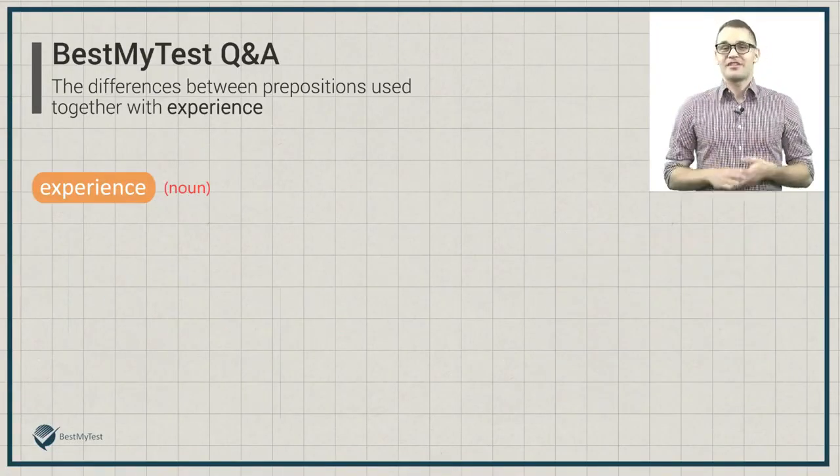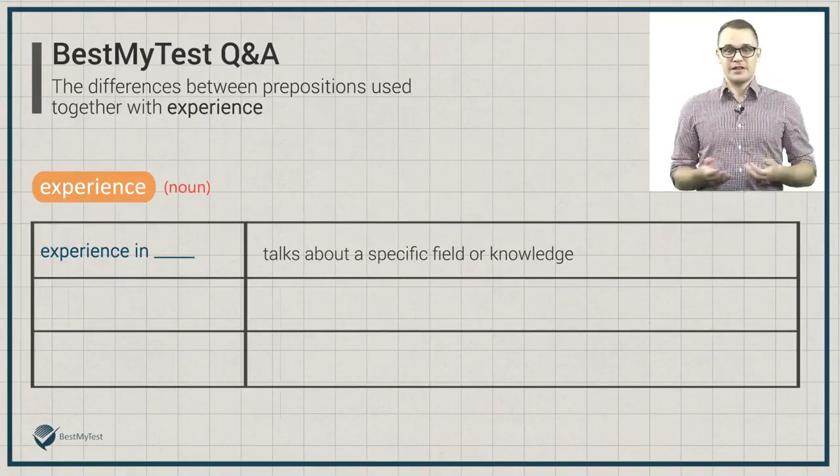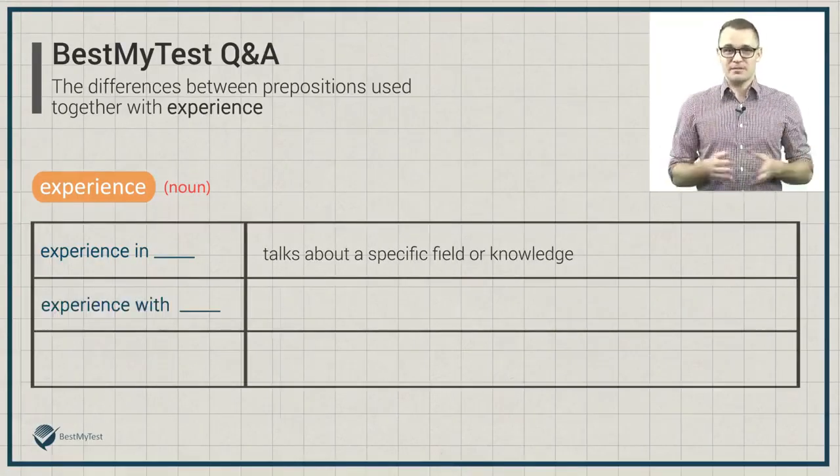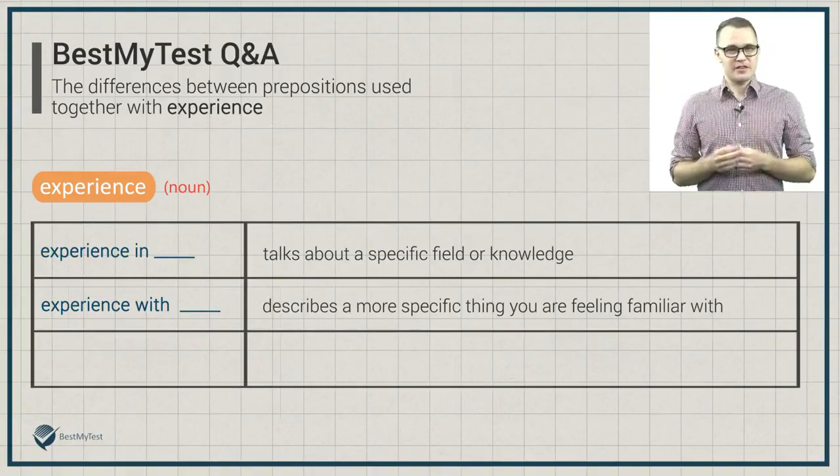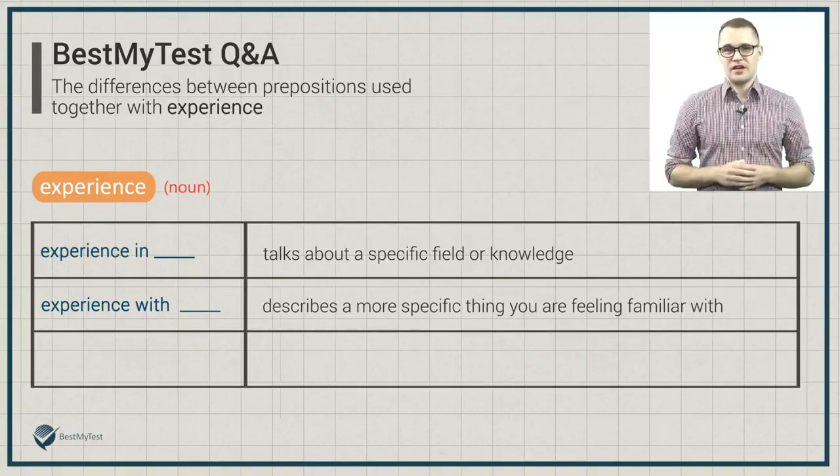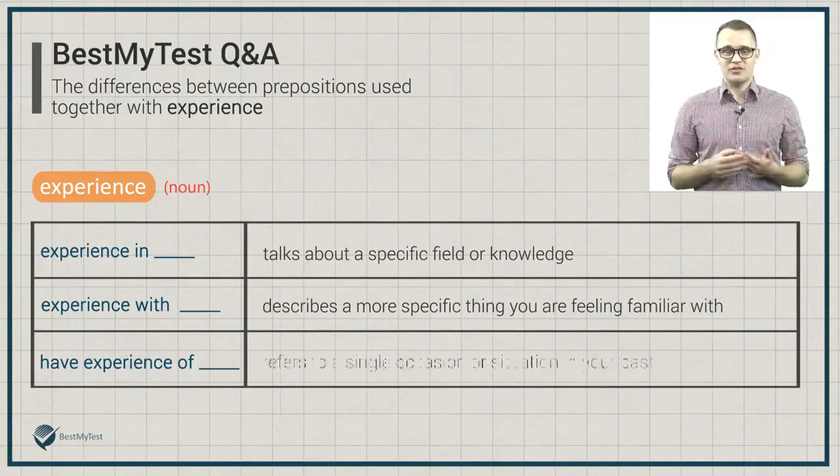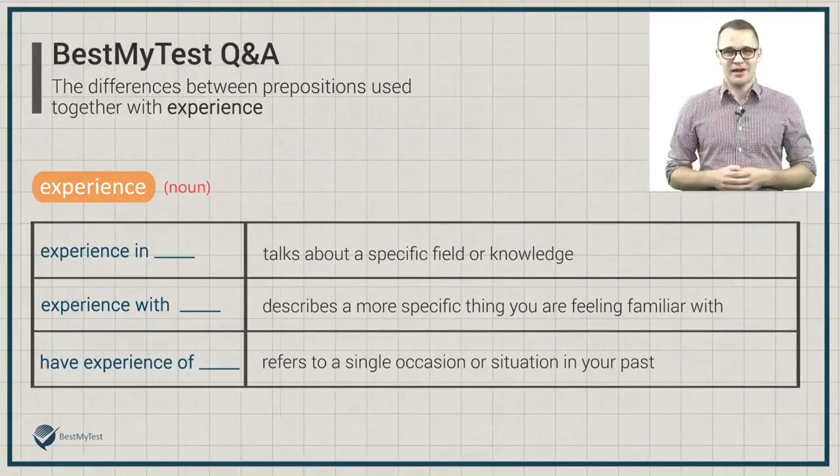To wrap it up, experience in something talks about a specific field or knowledge. Experience with something describes a more specific thing you are feeling familiar with. And, experience of something can refer to a single occasion or situation in your past.